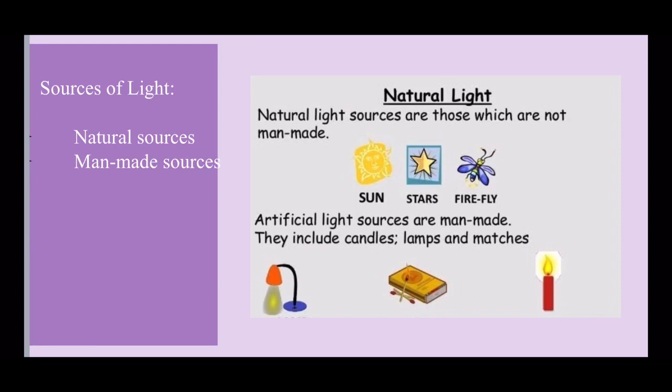Next are the man-made sources of light. The sources of light which have been made by humans are called man-made sources of light. For example, candle, tube light, electric bulb, torch, kerosene oil lamp.